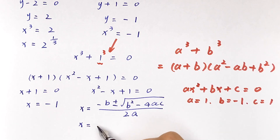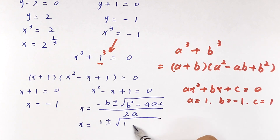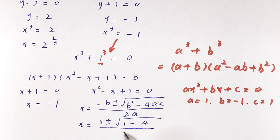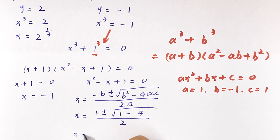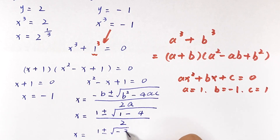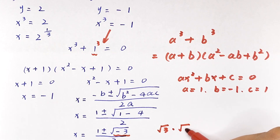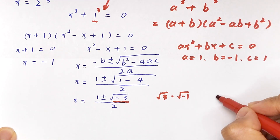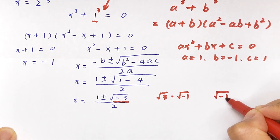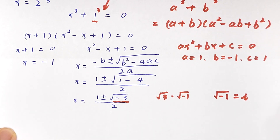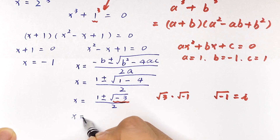Since b equals negative 1, negative b is 1, so x equals 1 plus or minus square root of 1 minus 4, over 2. This gives x equals 1 plus or minus square root of negative 3, over 2. We rewrite the square root of negative 3 as square root of 3 times square root of negative 1, and since square root of negative 1 equals i (imaginary), we get x equals 1 plus or minus root 3 times i, over 2.